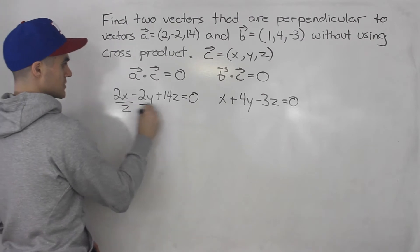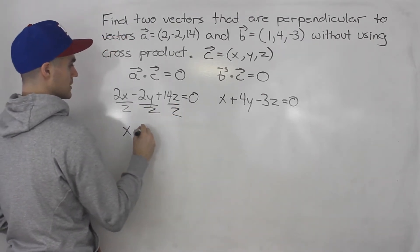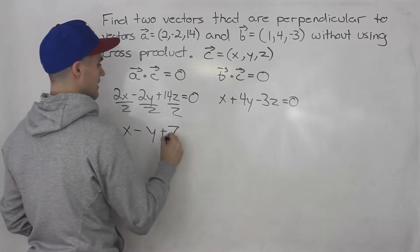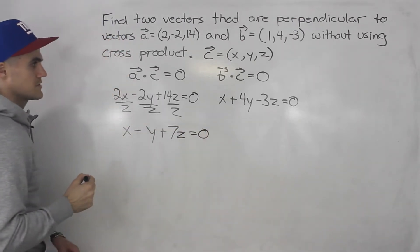Notice here how we can actually simplify all this. We could divide everything by 2. So we got X minus Y plus 7Z is equal to zero.